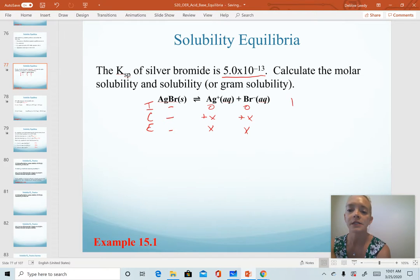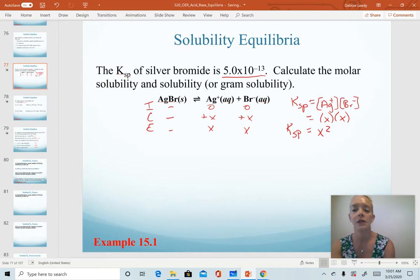The next step is to set up our equilibrium expression. Here we have the concentration of silver ion and the concentration of bromide ion, each first order because of the coefficients of 1. When we plug in our values at equilibrium, we have just x and x, and so our Ksp equation comes out to be x squared.